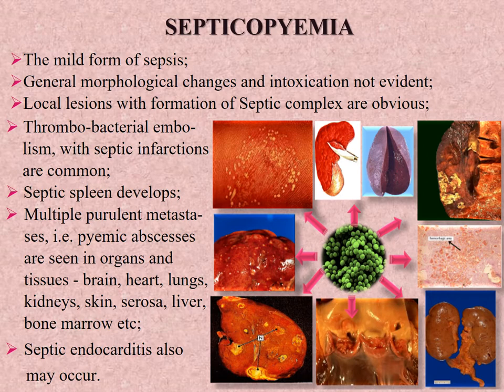Septicopiemia is a mild form of sepsis — general morphological changes and intoxication are not evident. Local lesions with formation of the septic complex are obvious. Thrombobacterial embolism with septic infarctions is common. Septic spleen develops. Multiple pulmonary metastases occur. Epidemic pyemic abscesses are seen in organs and tissues: brain, heart, lungs, kidneys, skin, serous coverings, liver, bone marrow, etc. Septic endocarditis may also occur.